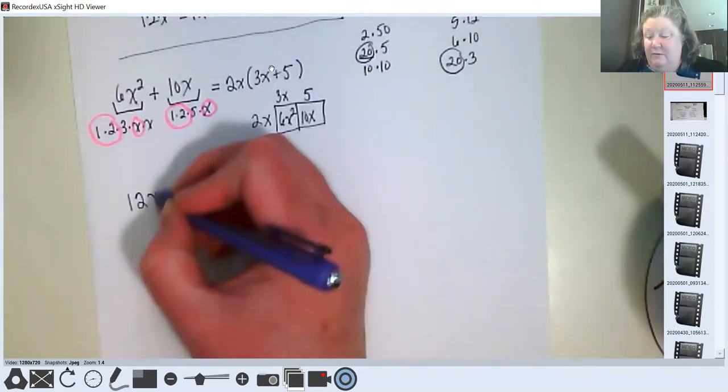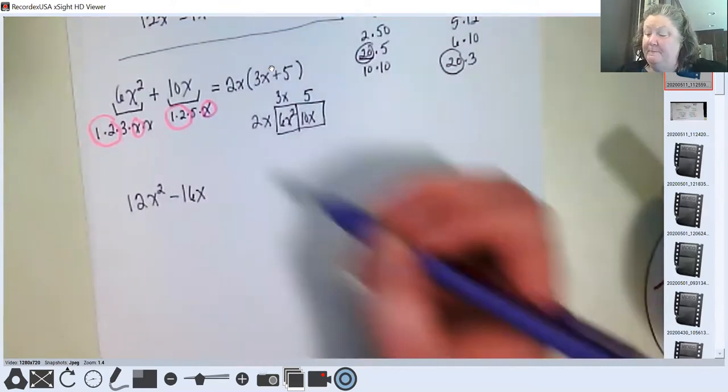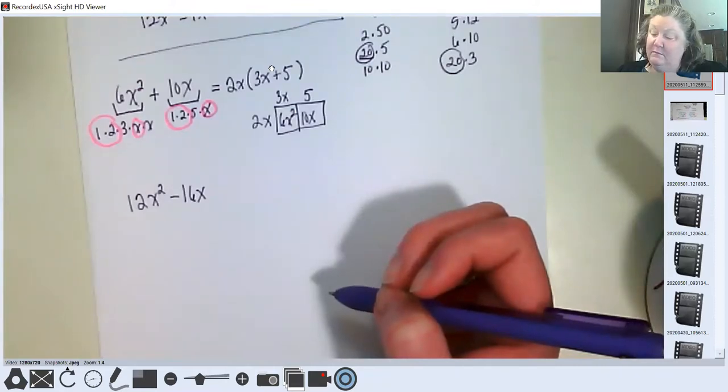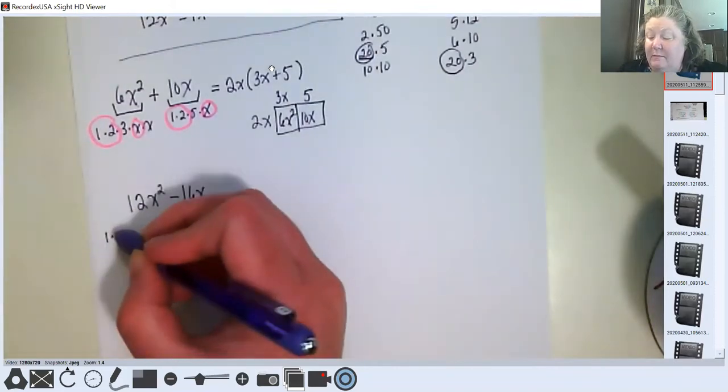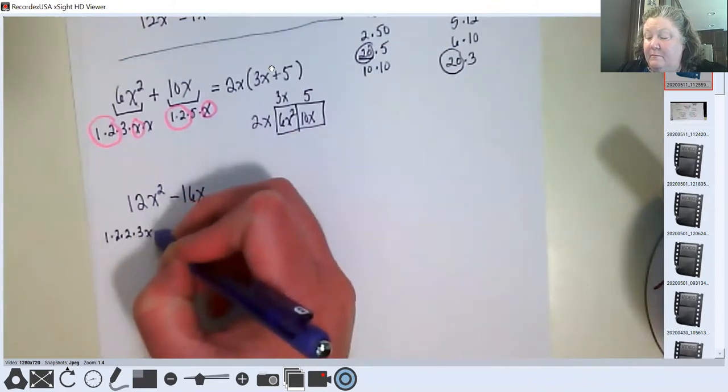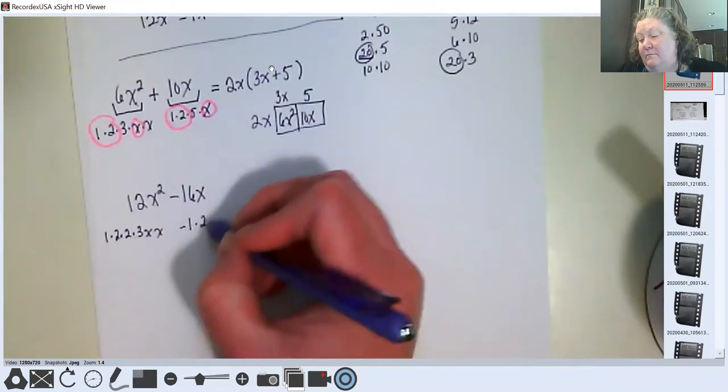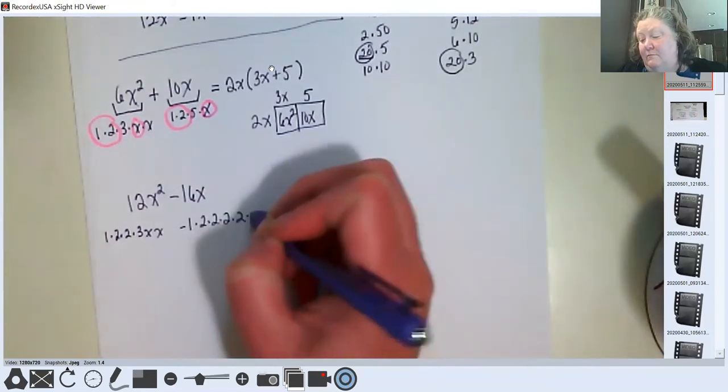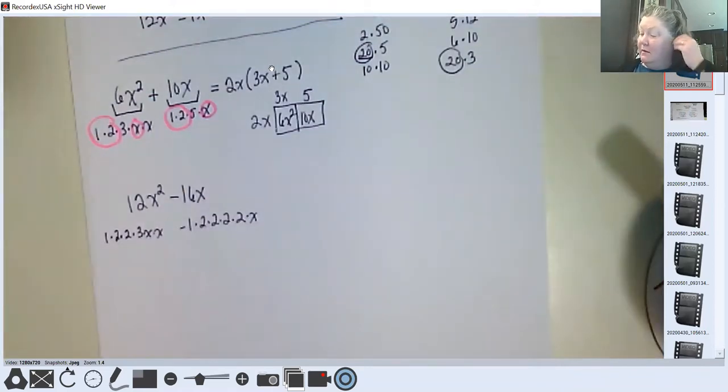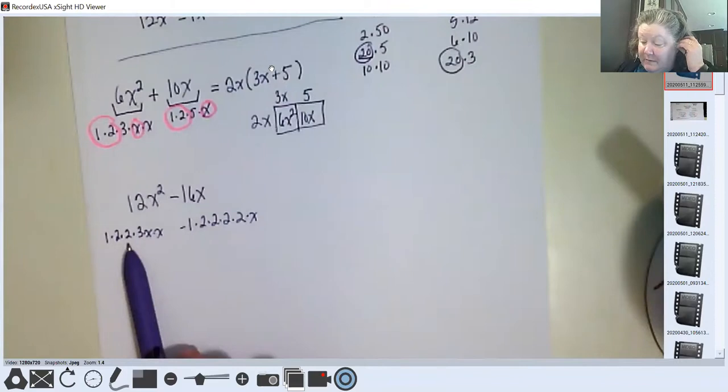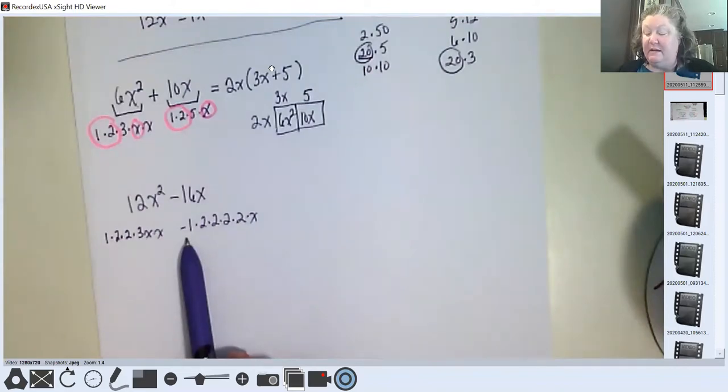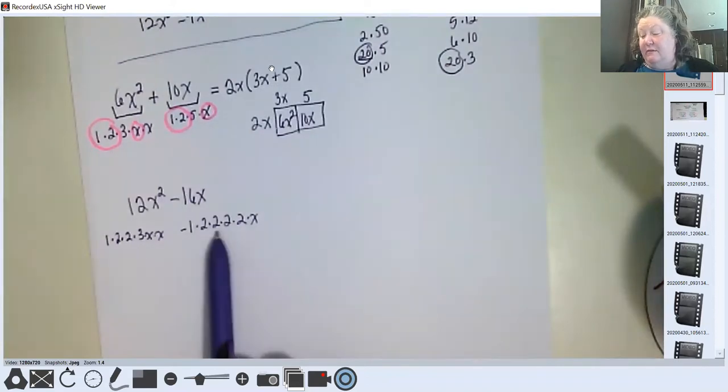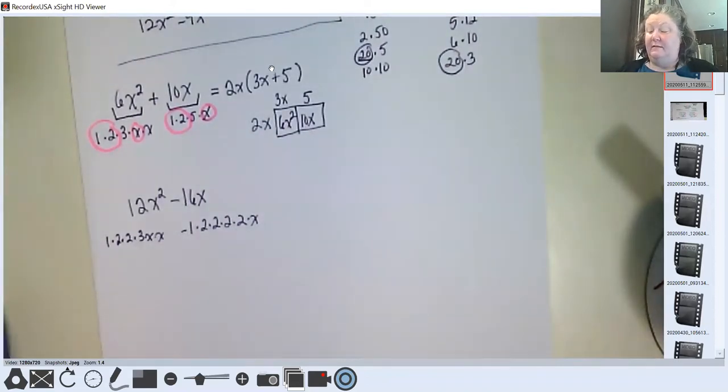Let's try it with another one. 12x squared minus 16x. What do they both have in common? Well, I know 12 and 16 both have a 4 in common, but I'm going to show it by putting down the prime factors. Sorry, I didn't have the time symbols there. 12x squared broken down to its primes is 1 times 2 times 2, that's 4, times 3 is 12, and then both x's. This one gets a negative 1 instead of a positive 1 because it's a negative 16. And then 2 times 2 is 4, times 2 is 8, times 2 is 16, and a single x. So what do we have in common?